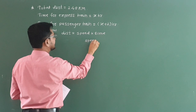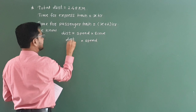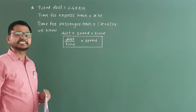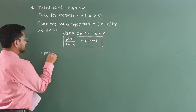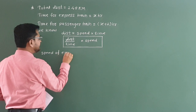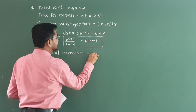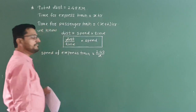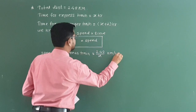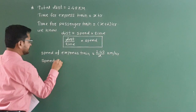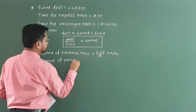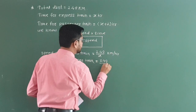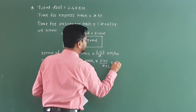So here, speed is equal to distance divided by time. By using this formula we can calculate the speed of both trains. Therefore, speed of the express train is equal to 240 divided by x km per hour. Similarly, speed of the passenger train is equal to 240 divided by (x plus 2) km per hour.